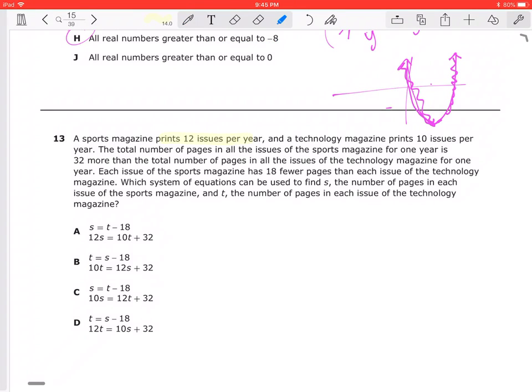Alright, so we have a sports magazine that sells 12 issues per year and a technology magazine that sells 10 issues per year. The total number of pages in the sports magazine in one year is 32 more than the total number of pages of all the technology magazines for one year. Each sports magazine has 18 fewer pages than each of the technology magazines.